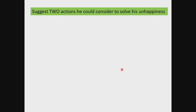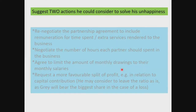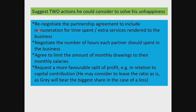Suggested actions Fraser could consider: renegotiate the partnership agreement to include remuneration for extra time spent or services rendered; agree to limit monthly drawings to prevent one partner withdrawing more than received; request a more favorable profit-sharing ratio (e.g., 3:2 instead of 4:1, or split according to capital contribution).